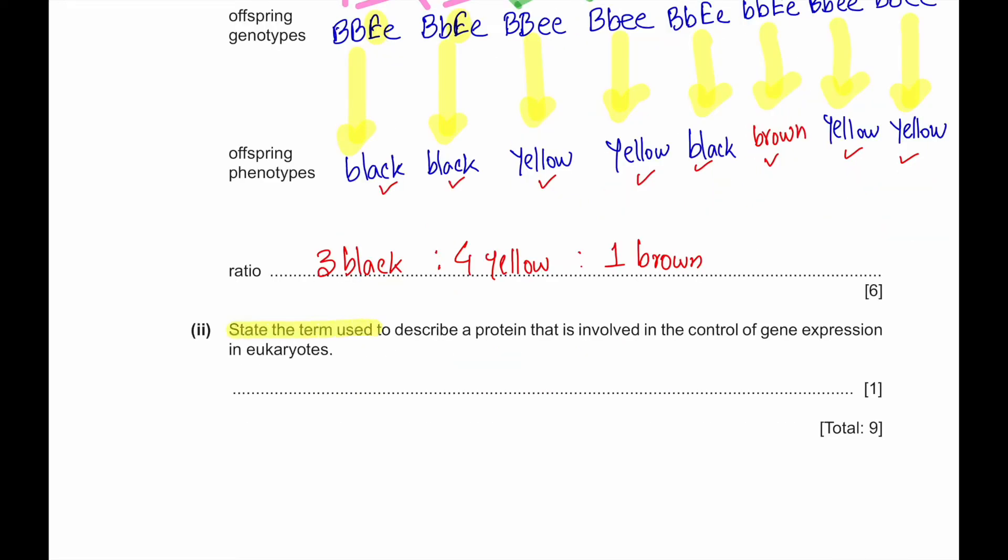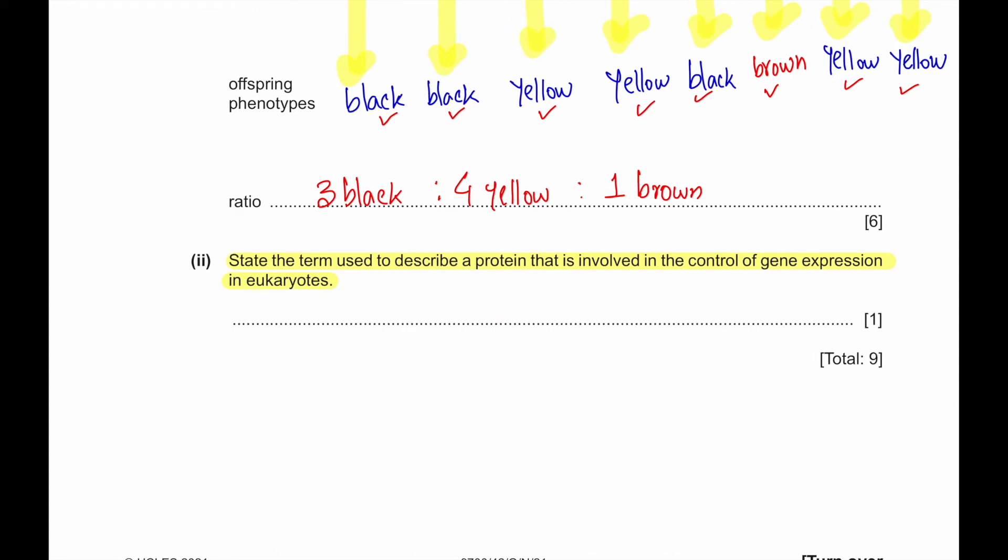Part 2: State the term used to describe a protein that is involved in the control of gene expression in eukaryotes. Gene expression in eukaryotes is controlled by transcription factor.